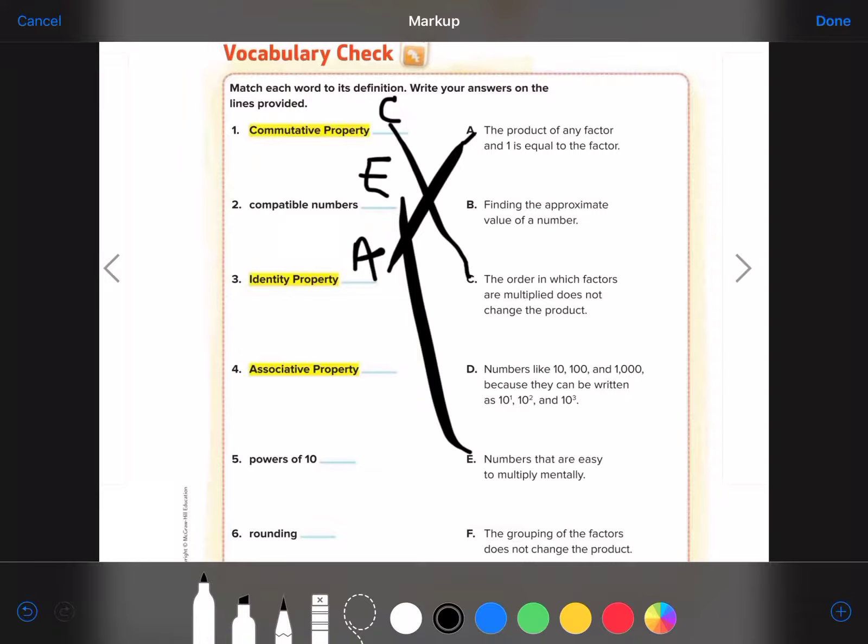Associative property is the grouping of factors that does not change the product. So F.